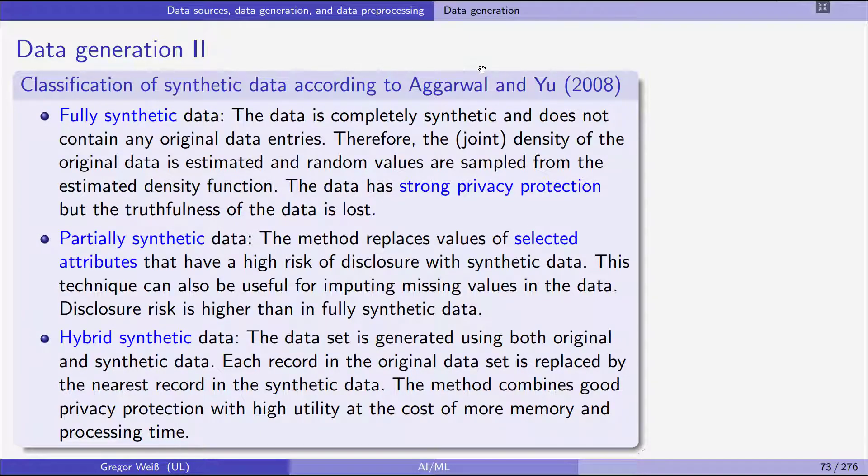So let's at this point look at three different ways how to generate data and what types of synthetic data we can differentiate between. The first one is fully synthetic data. And this is when the data is completely synthetic, is completely artificial, if you want to call it this way. And it does not contain any original data entries, any original observations or values of certain variables.